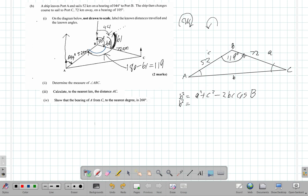Now in this case, b squared, whatever it is, is equal to a squared, so this is my a, so 72 squared, plus c squared, this is my small c, 52 squared, minus 2 times...